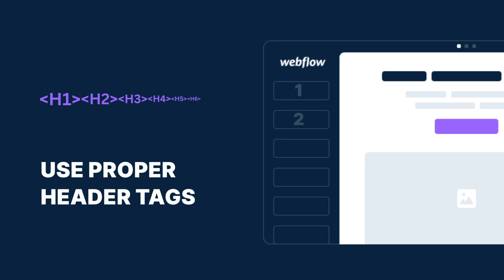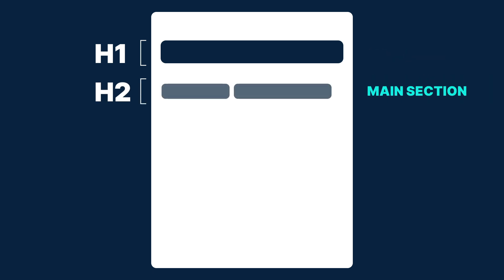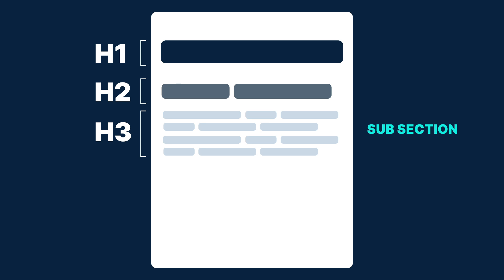Second, use proper header tags. Google relies on header structure to understand your content. If your headings are random or even missing, your site won't rank well. Every page should have only one H1 — this is your main title and should include your primary keyword. Use H2s for main sections and H3s for subsections, and definitely avoid skipping header levels. This keeps your content organized and helps search engines understand the page structure. But if people don't know how to get to your content, your SEO is still going to suffer.